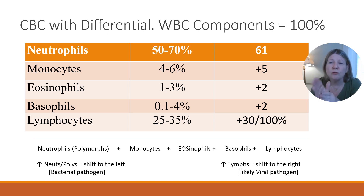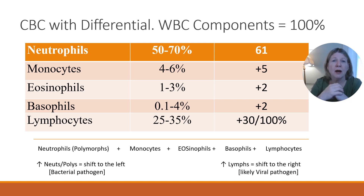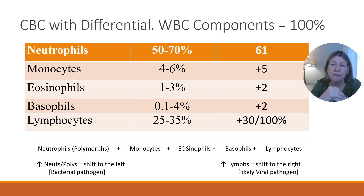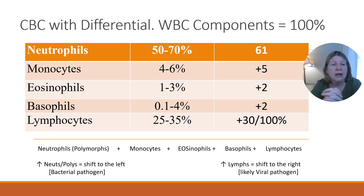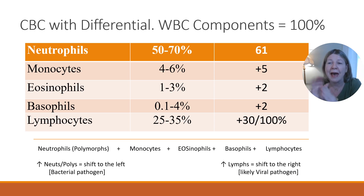Looking at normal lab results in the far right column: for a sample CBC with differential today, neutrophils are between 50 to 70%, here at 61. Monocytes 4 to 6%, with a count of 5. Eosinophils 1 to 3%, here at 2%. Basophils 0.1 up to 4%, here at 2%. And lymphocytes 25 to 35%, here at 30. So there's nothing out of range with this particular example.